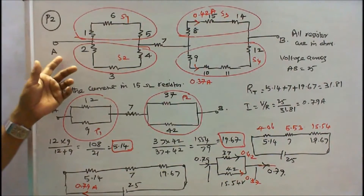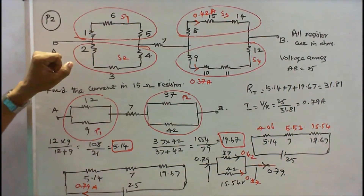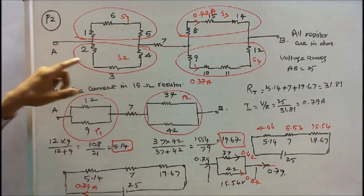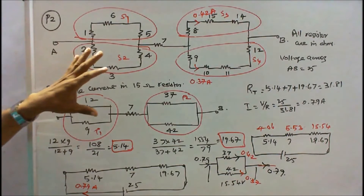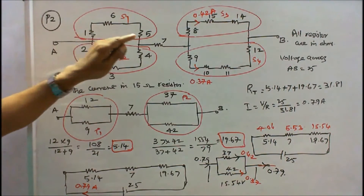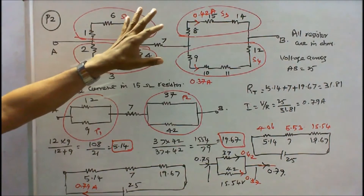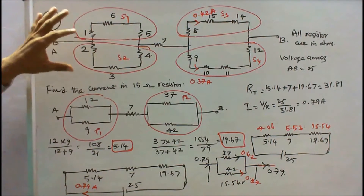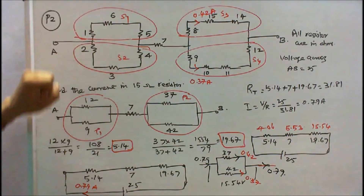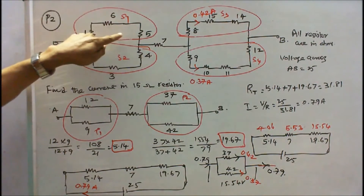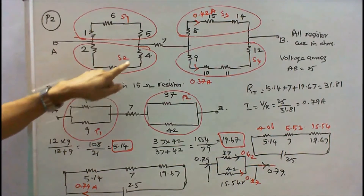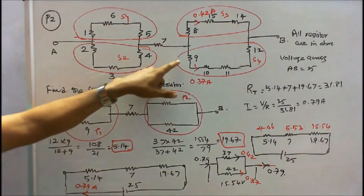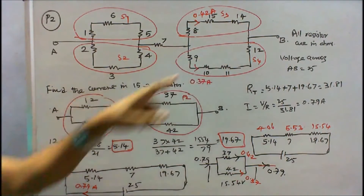In the second problem, 14 resistances are connected as shown in the figure, all in ohms. The voltage across points A and B is 25V. Our aim is to find the current flow through the 15Ω resistor. We identify series and parallel groups: these three resistors are in series, these three are in series, these three are in series, and here four resistors are in series.